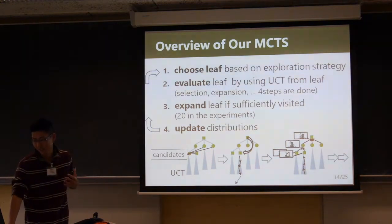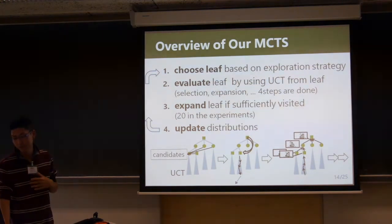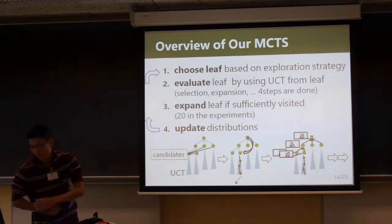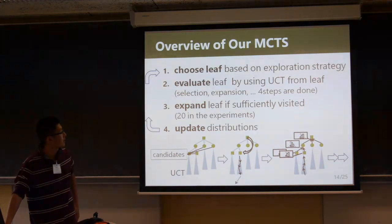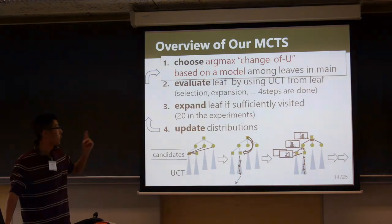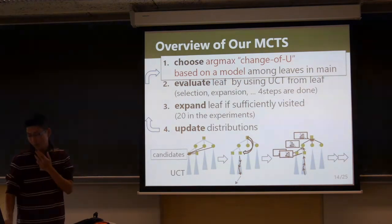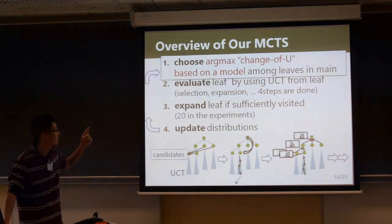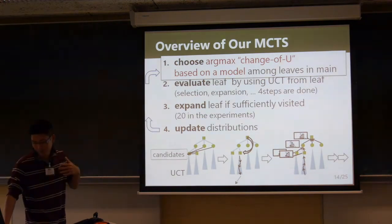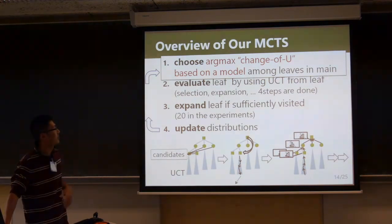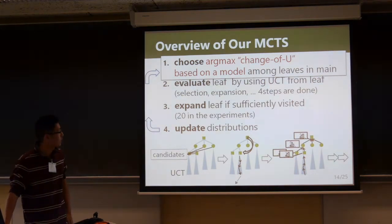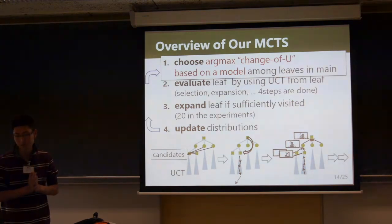To summarize the organized ideas, I show an overview of our algorithm again. The first step calculates the change of U-value based on a model and chooses the leaf with the maximum change of U-value. That is the exploration search.